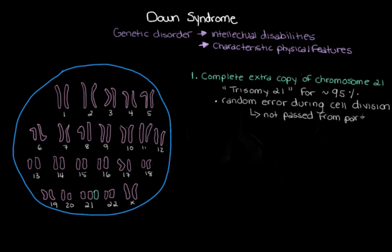Another way that someone with down syndrome could end up with this extra genetic material from chromosome 21 is through what we call translocation. So we've got two copies of chromosome 21, and part of one of these copies actually attaches — translocates — to another chromosome, often chromosome 14. So this person has two full copies of chromosome 21 and then an extra little part of chromosome 21 attached to a totally different chromosome, meaning they end up with three copies of genetic material from chromosome 21.